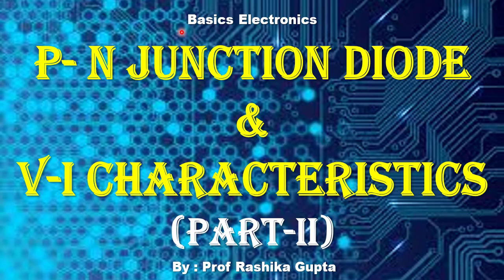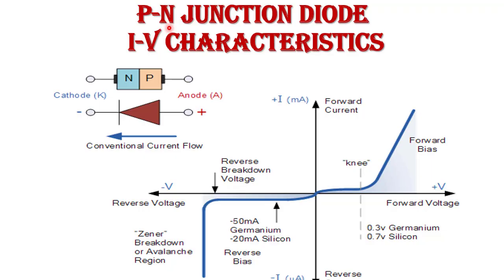Hello friends, welcome to Quick Learn Tutorial Series. In this video I will explain PN junction diode and its VI characteristic. This is part 2 of PN junction diode. In part 1, I have already explained some basic concepts: the formation of PN junction, zero bias, diffusion process, diffusion current and barrier potential. For those topics, please visit my previous video. In this video I will explain the PN junction diode layer structure, circuit symbol, VI characteristic, and operating modes.